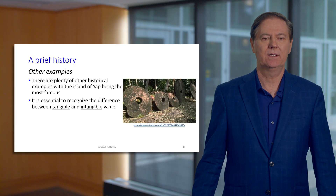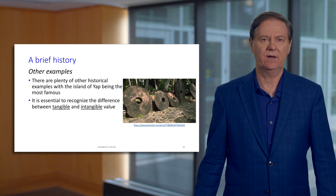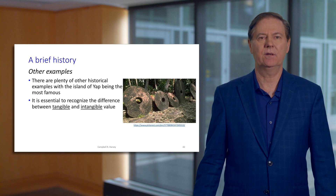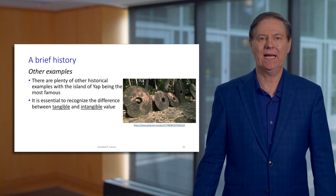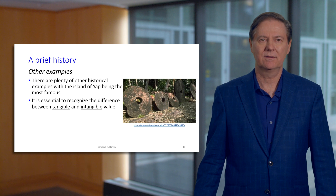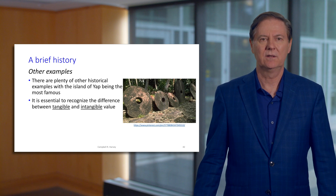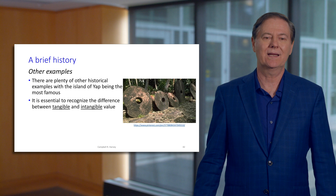The message here is that we need to recognize the difference between tangible and intangible value. Gold — a gold coin has got tangible value. The US currency, even though it's not backed by gold since 1971, has got some value in that the government can tax you and you need to pay in US dollars. It has tangible value because it's legal tender and must be accepted, and because if you violate not accepting the dollar, you can be incarcerated.